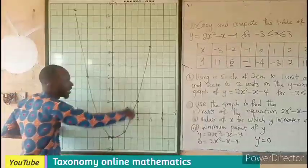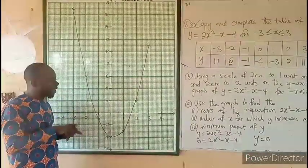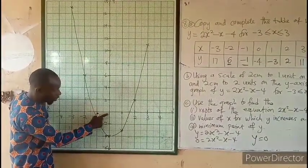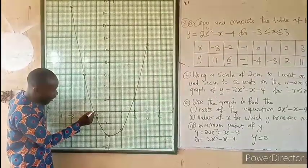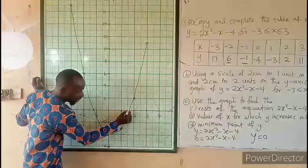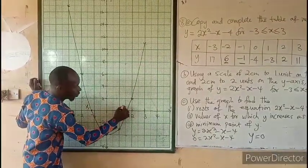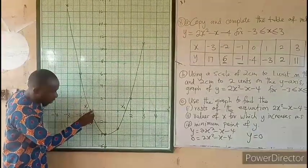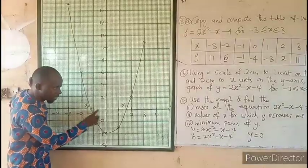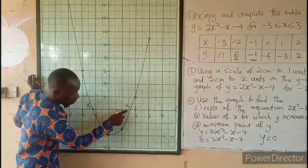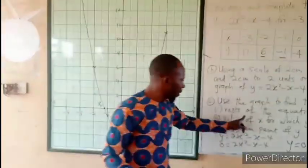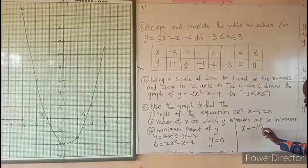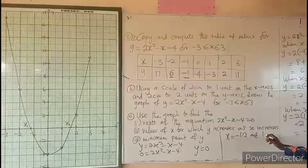When the curve cuts the x-axis, those two points become the solution or roots of the equation. With an interval of 0.1, each division is 0.1. The curve cuts the x-axis at x₁ and x₂. Counting from negative 1: 0.1, 0.2, and from 1: 1.1, 0.2, 0.3, 0.4, 0.5, 0.6. So our solution is x = -1.2 and x = 1.6. These are the roots of the equation.